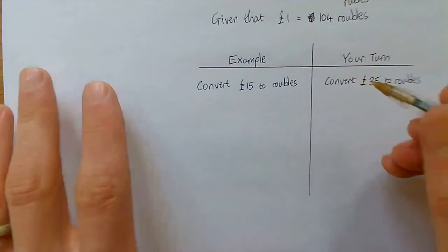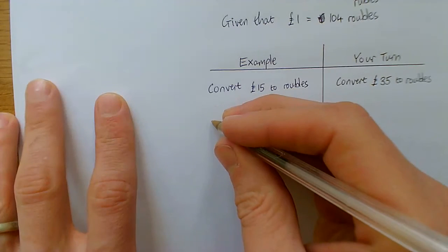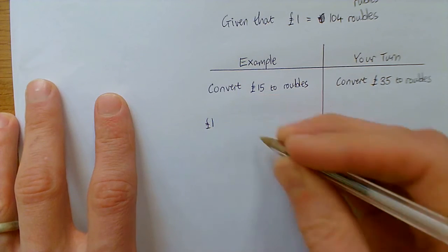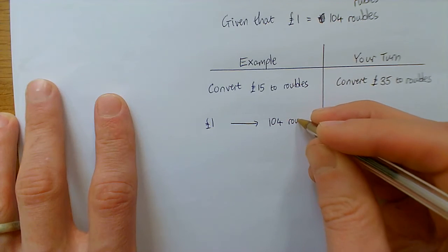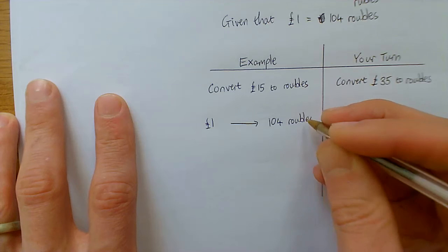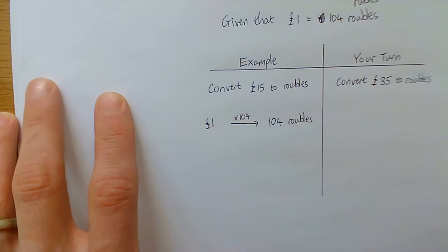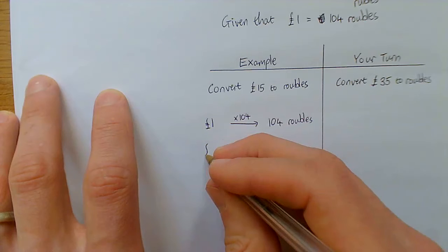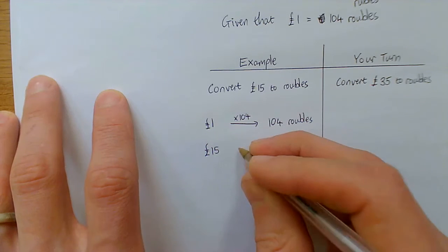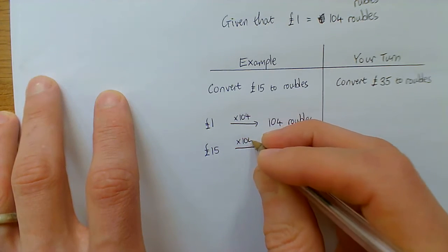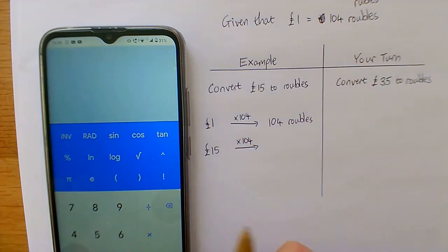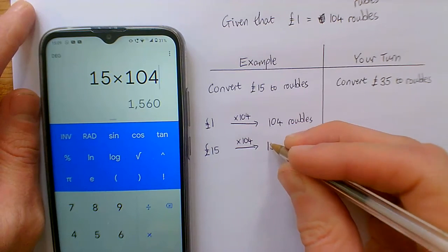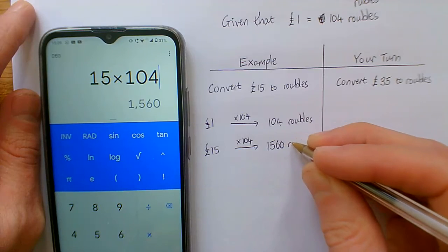And what we're going to do is we're going to do another conversion. So £15. But remember, we always write down our exchange rate first. So £1 goes to 104 rubles. Now, there's not a nice symbol for rubles particularly. So we're just timesing by 104. So if I take £15, I'm also timesing that by 104 because that's the exchange rate. So bring in our calculator, 15 times 104 gives us 1,560 rubles.